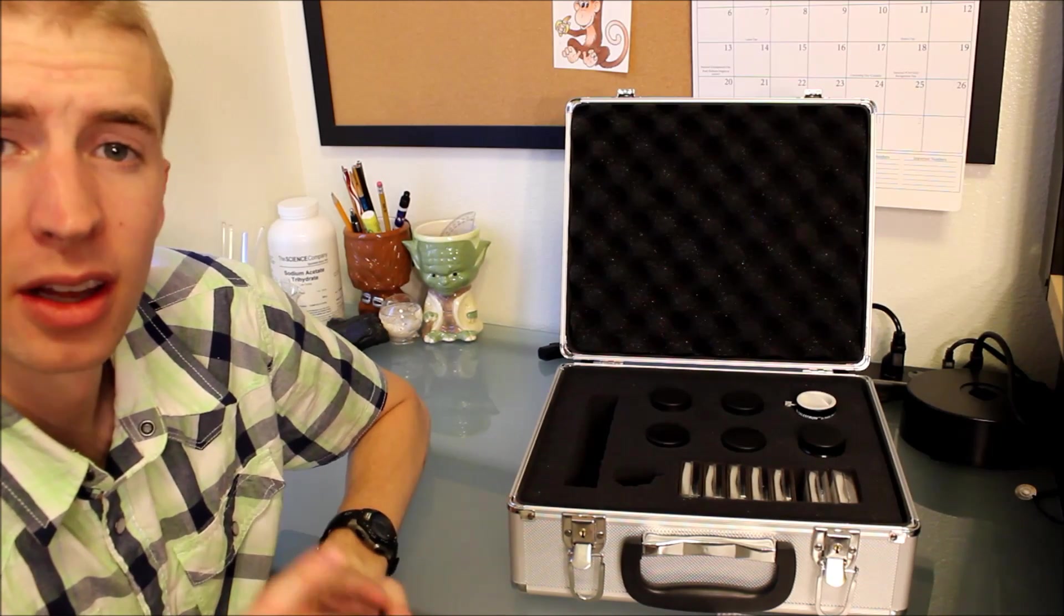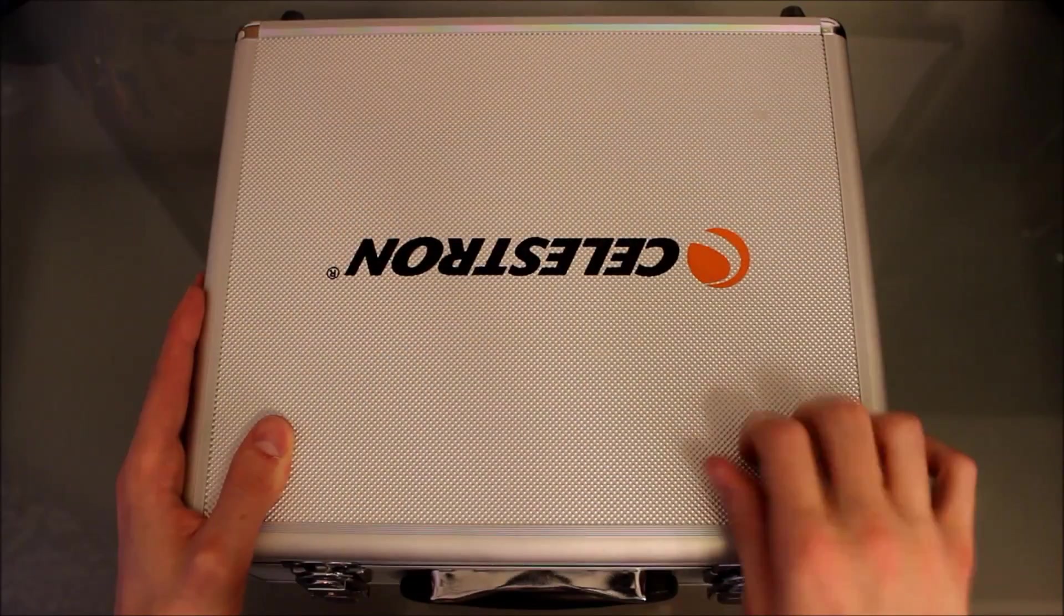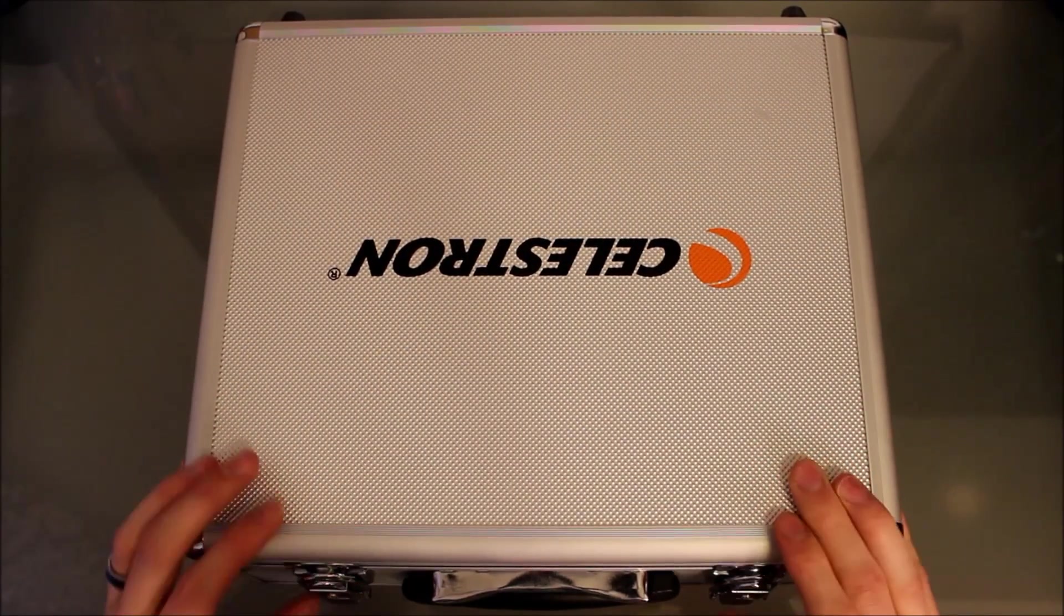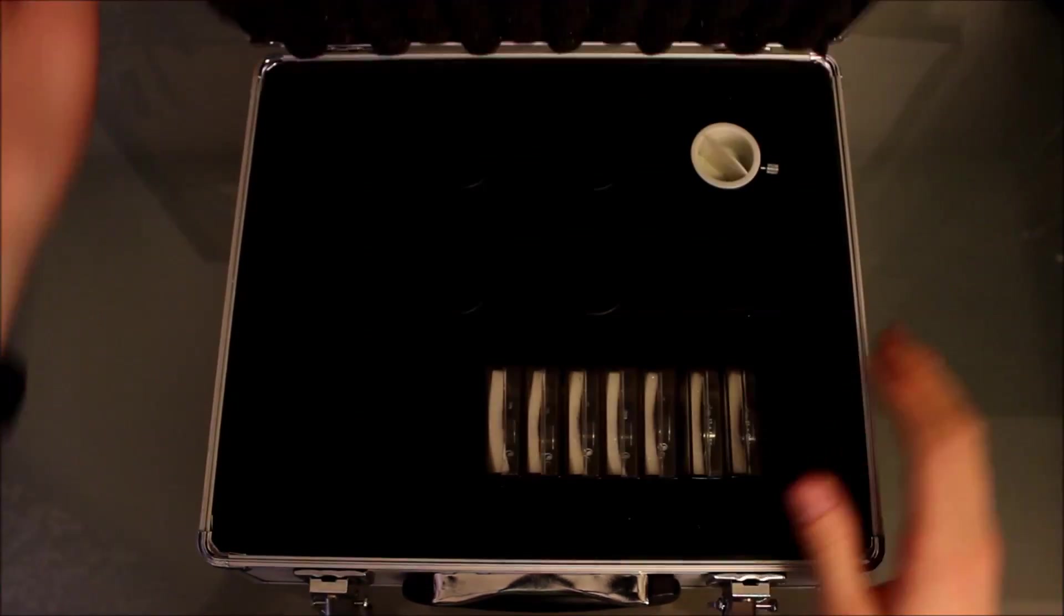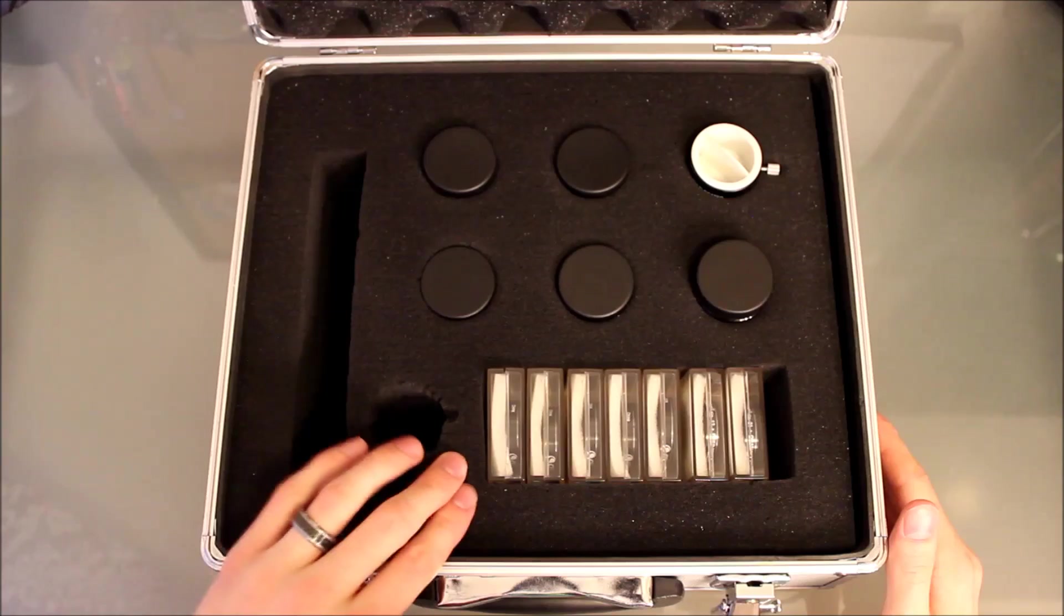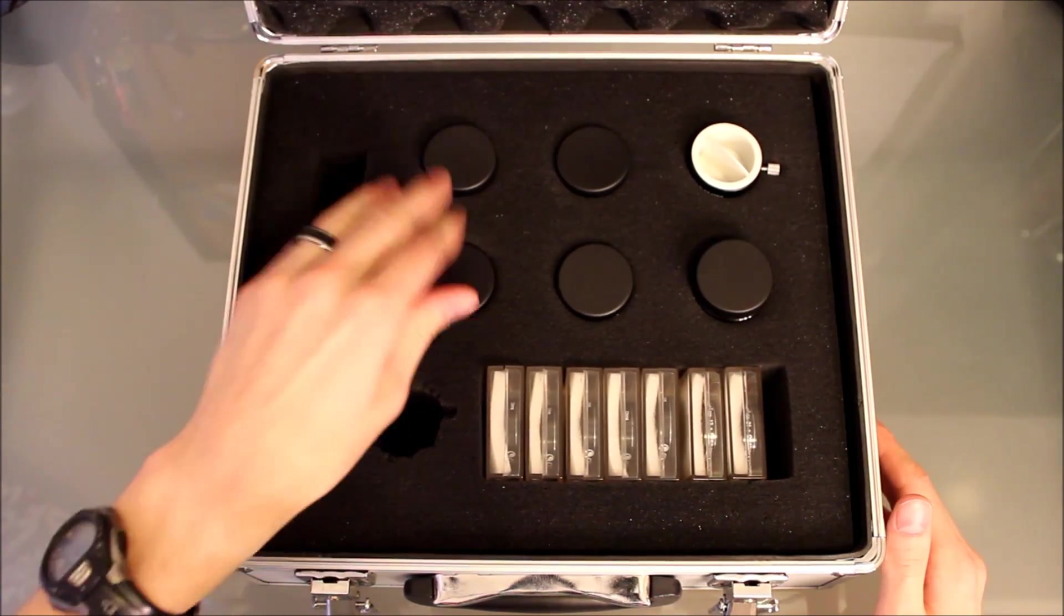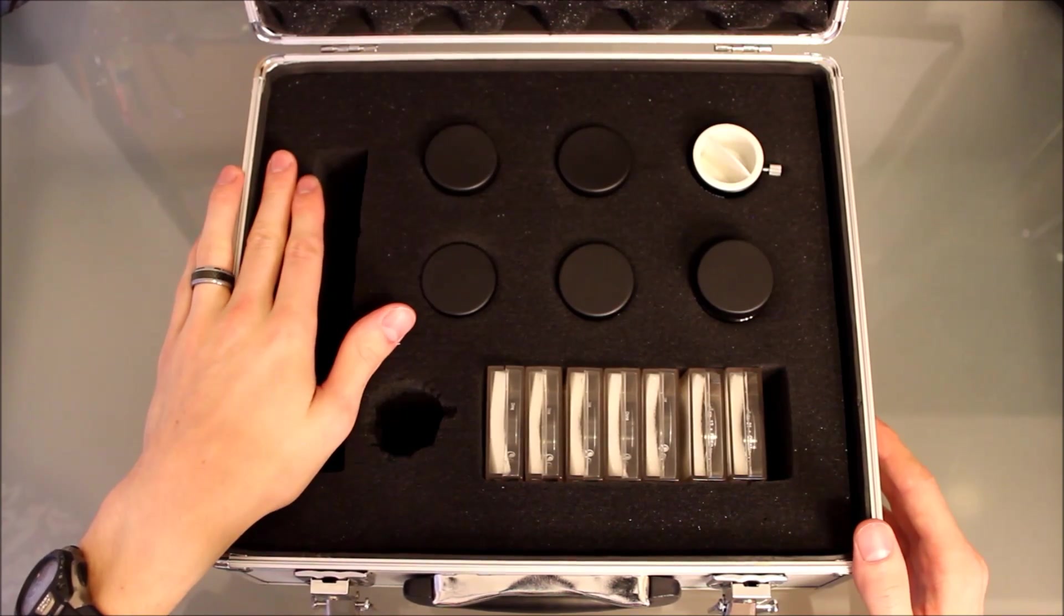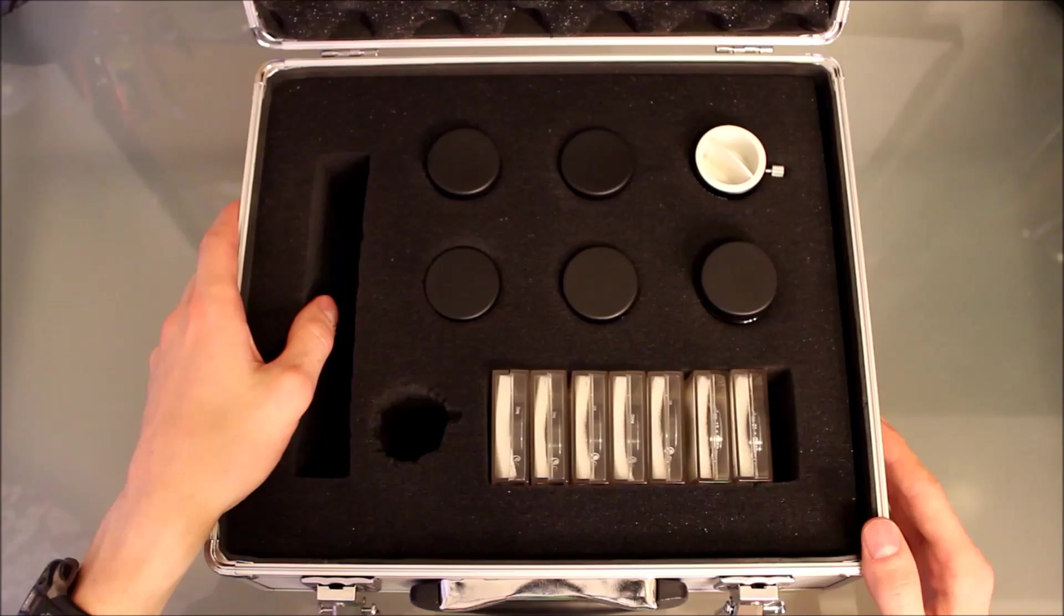But one good thing about the kit that I do really enjoy is the case. It's really, really solid on the outside, and it comes with locks, so if you want to lock it, you can. And then on the inside, you have really good foam to protect all of your eyepieces. So, this is actually really one of the best parts of the whole kit, I think, is just the box it comes with.